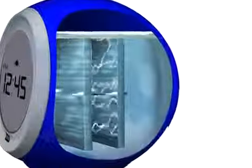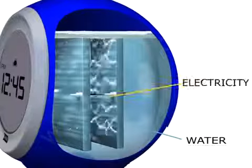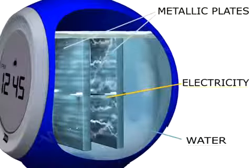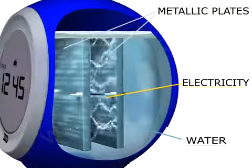Simply fill it with water and a natural chemical reaction that occurs between two of its internal metallic plates generates enough eco-friendly electricity for the clock to keep perfect time and do so indefinitely.